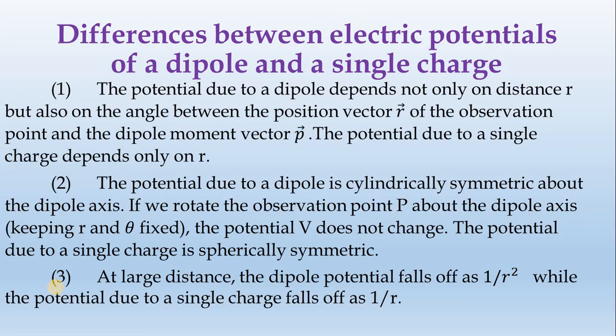What is the potential of a charge? V is equal to 1 divided by 4π epsilon-zero, into charge divided by distance.